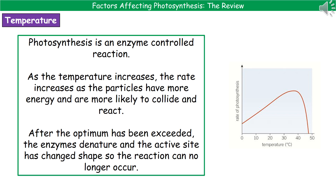The last factor to consider is temperature. From the graph on the right, you'll notice this is different to the other two, because photosynthesis is an enzyme-controlled reaction. That graph looks just like the ones for enzyme reactions affected by temperature. Initially, increasing the temperature increases the rate of photosynthesis because the enzyme and substrate have more energy — they're moving faster, more likely to collide and therefore react. We hit the optimum where it's working at its fastest rate. Then, as you go past the optimum temperature, the enzymes are denatured: the bonds within the protein are broken, the active site changes shape, and therefore the substrate no longer fits, so the reaction can no longer occur.